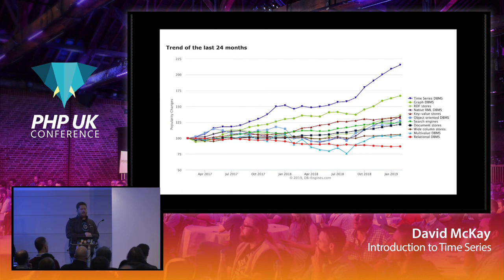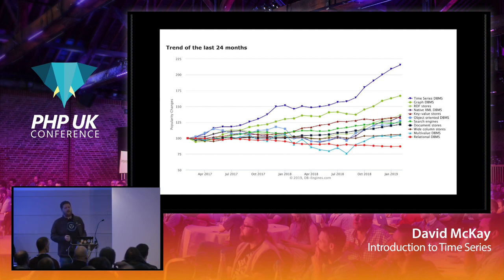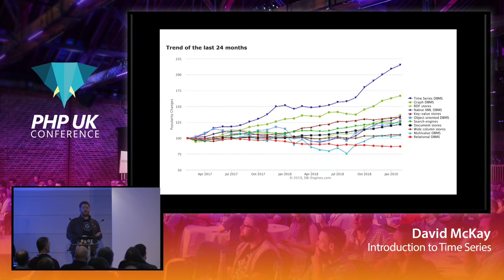This graph from DB-Engines tracks Twitter mentions, Google searches, active GitHub repositories, and more to track the growth of each database category. The blue line storming ahead at the top is time series — the fastest growing category of database for the last two years. I think the reason is we're now starting to change our architectures. There are people in this room with monolithic applications talking about containerization, microservices, and cloud-native.